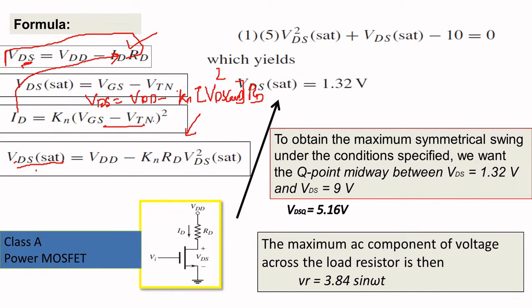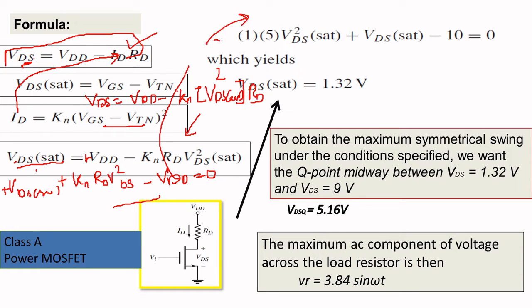Now when you substitute the KN value, they have rearranged this equation. So it becomes: VDS saturation plus KN times RD times VDS saturation squared minus VDD equals zero. This is a polynomial equation of degree 2 with KN and RD as known values, VDD equals 10 as the supply voltage, and VDS saturation as the unknown.